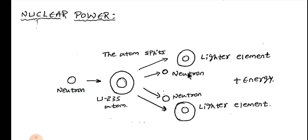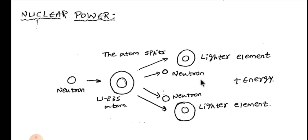These released neutrons go on to bombard other uranium atoms. They hit the other uranium atoms, and the process repeats over and over again, resulting in what is called a chain reaction. The chain reaction gives a greater amount of heat energy, which is used to boil water.